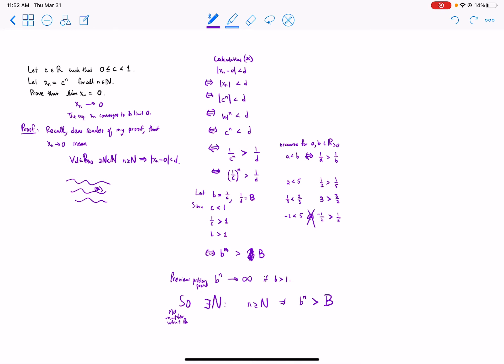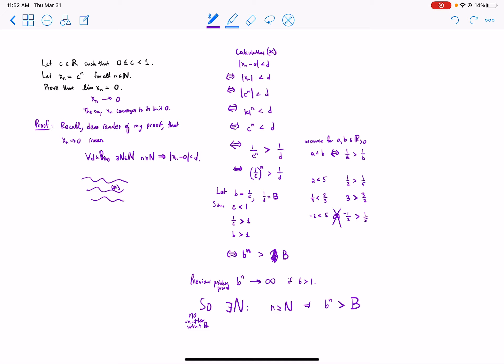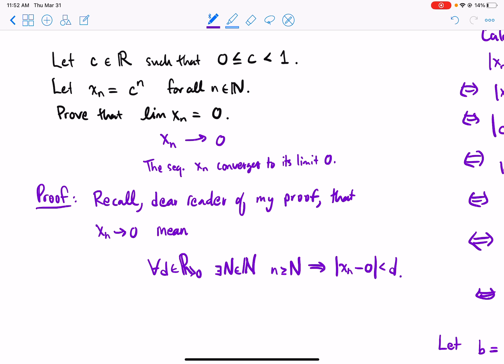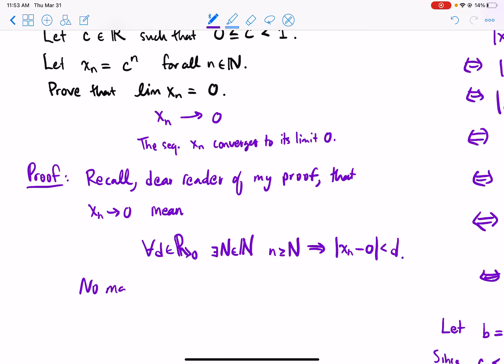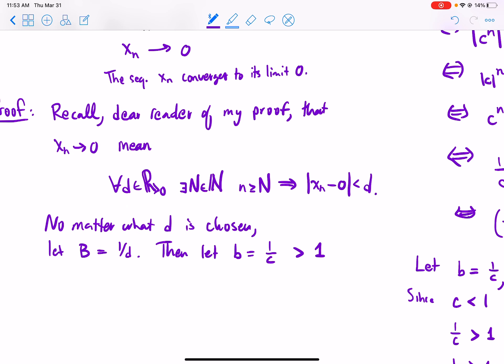So now I think we got it. I think we got it. But let's carefully explain this. So I'm gonna go over here. How do I explain this to my reader, my poor reader who's gonna try to understand my proof? Well, no matter what d is chosen, let capital B equal 1 over d. Then let b equal 1 over c, which is greater than 1, since c is strictly less than 1. Right?